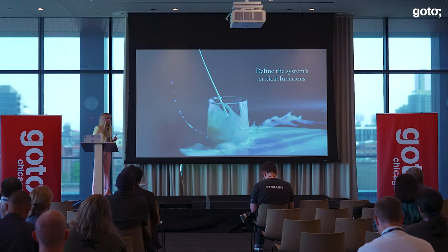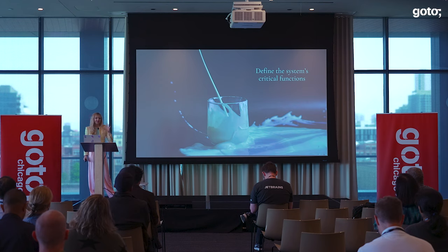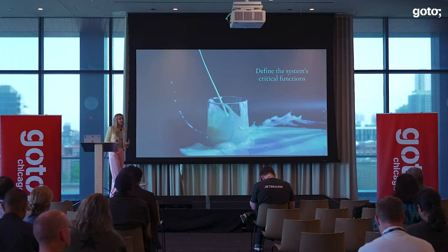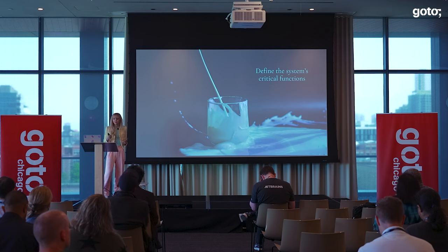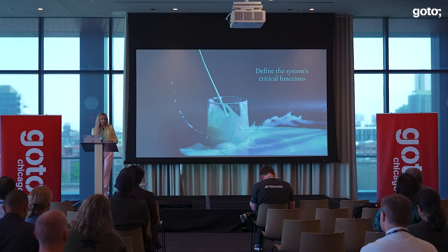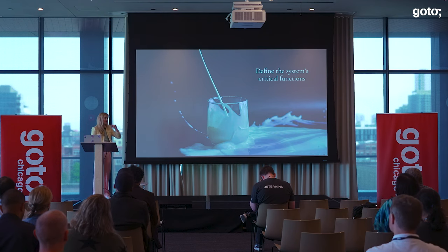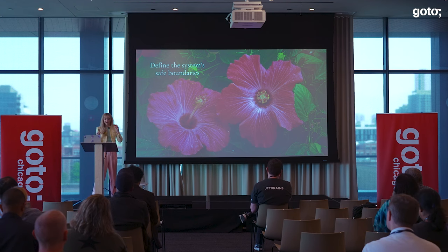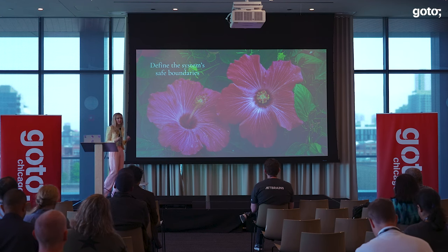The first ingredient in our resilience potion is defining the system's critical functionality — the system's reason for existence. What we care about is how the system performs its core operations when undergoing some sort of stress or adverse conditions. This is represented by milk in the resilience potion. The second ingredient is defining the system's boundaries of safe operation — the thresholds beyond which the system is no longer resilient to adverse conditions. The system can only absorb changes up to a certain point and stay within its healthy state of existence, represented by dried hibiscus in the potion.